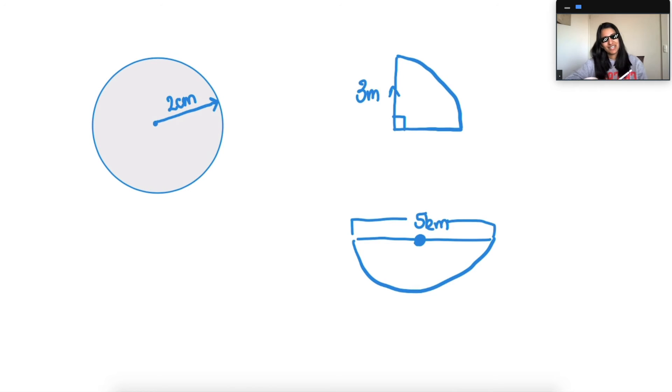All right, hopefully you were able to give these a try. I'm going to start with the first big circle here. Area is pi r squared, 3.14 times, and the radius is 2, so 2 squared. Let's see what we lined up with. 3.14 times 2 squared equals 12.56 centimeters squared.